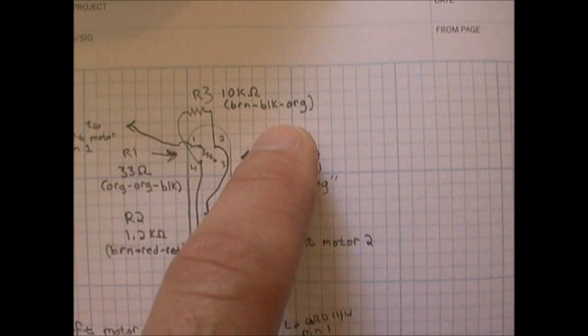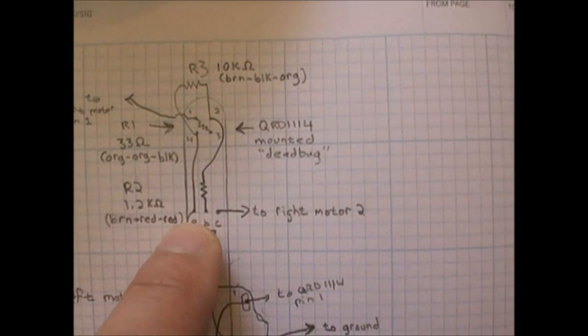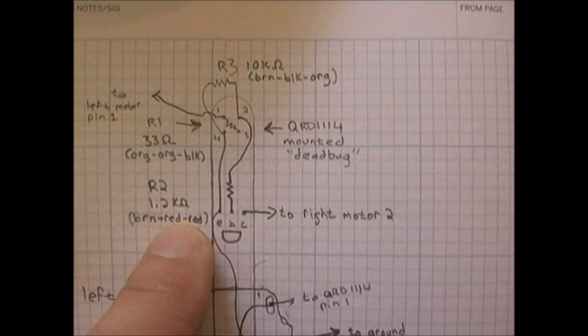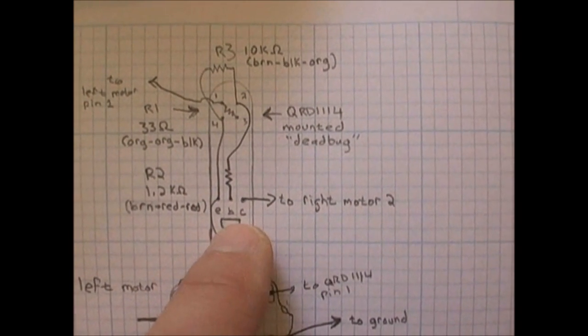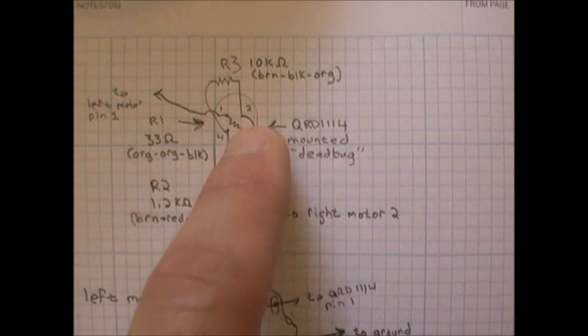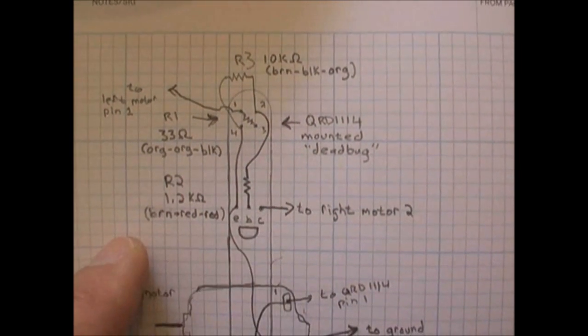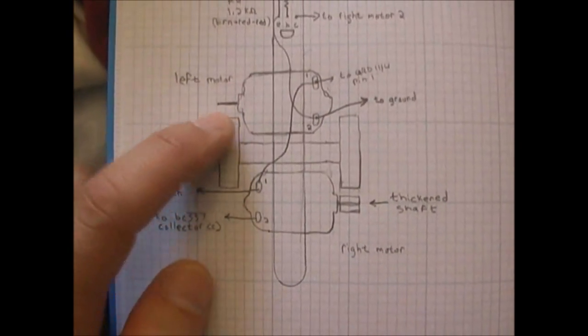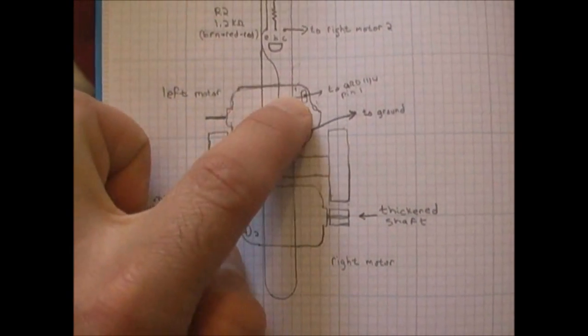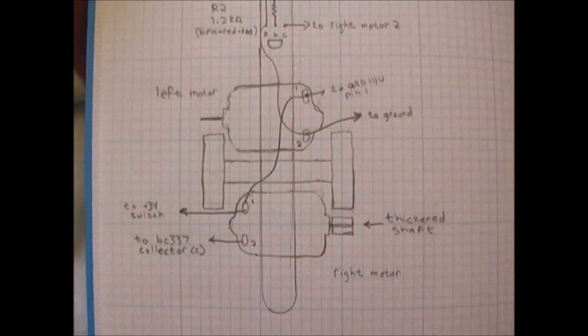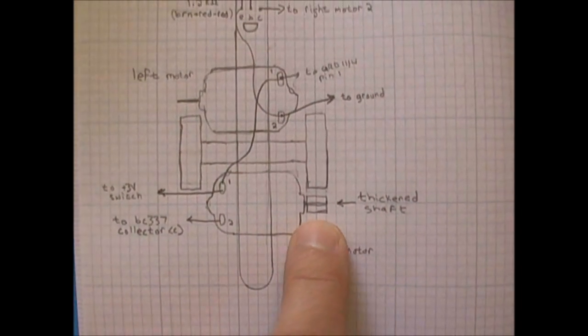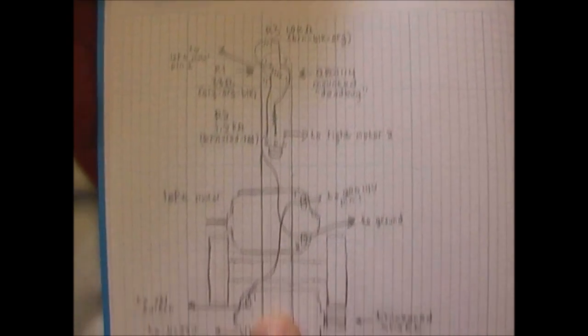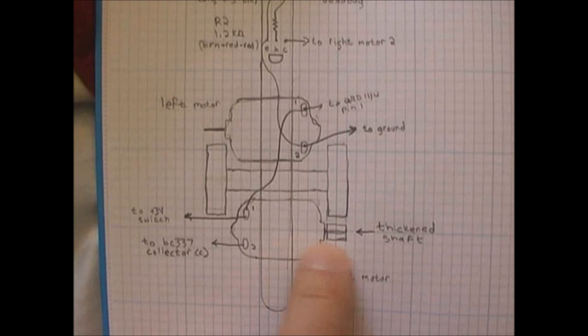This is a 1.2K ohm resistor going from the base to pin two. Moving down, you can see the left motor is again wired directly from three volts to ground. The right motor, with the shaft thickened, so that it will spin the wheel a little faster. Because of the voltage drop of the circuitry up here, the right motor needs to be sped up a little bit.